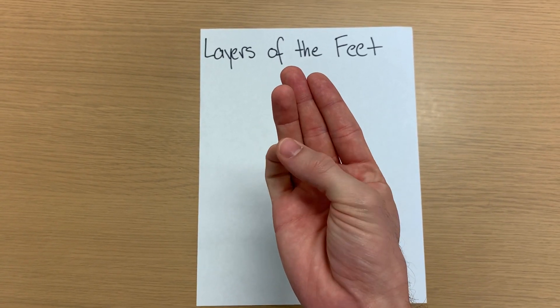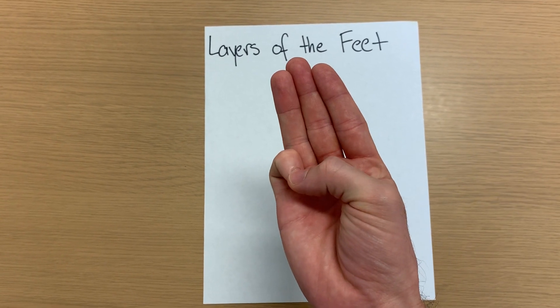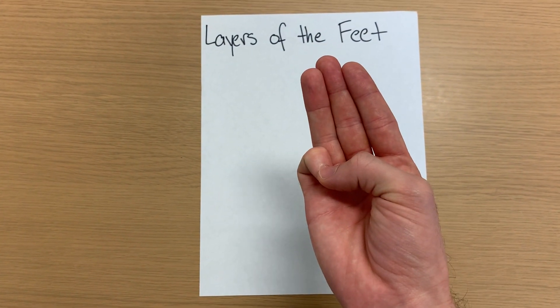Now remember for our flexor digiti minimi brevis, there's just a brevis, no longus. That's kind of weird, but that's just how it is.